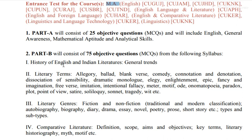The syllabus includes the history of English and Indian Literature and General Trends in Unit 1. Unit 2 covers Literary Trends. Key terms include Allegory, Ballad, Blank Verse, Comedy, and Connotation and Denotation.